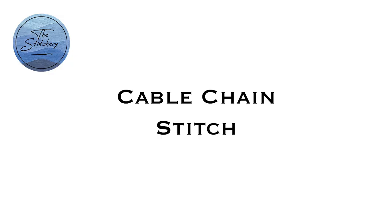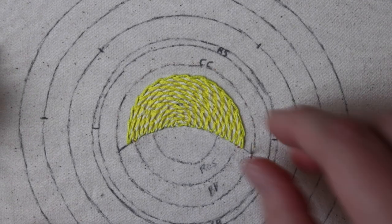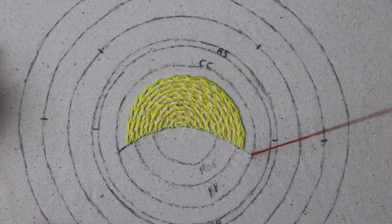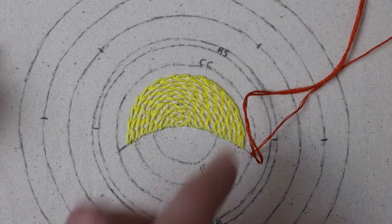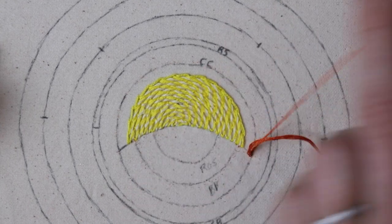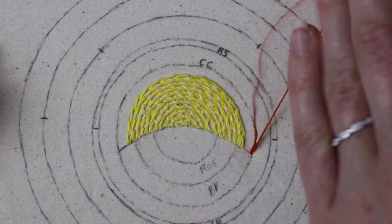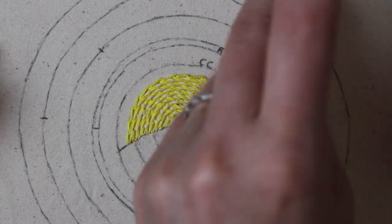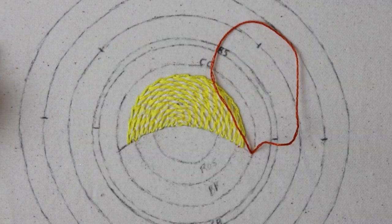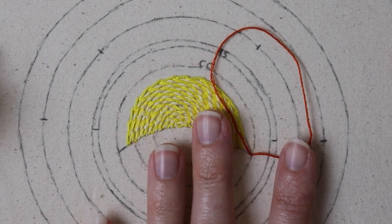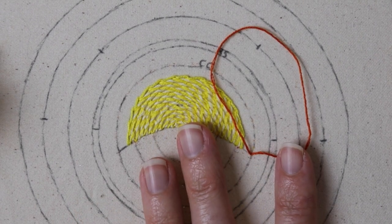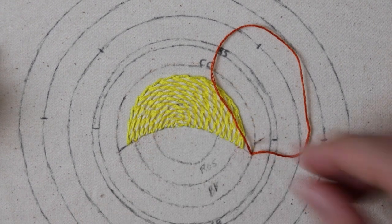We're gonna start out by doing one regular chain stitch. This is just sort of the anchor and this isn't necessarily the only way to do it. I've seen people do cable chain stitch without using a sort of regular chain anchor on one side, but I find this the easiest way. So you're creating that very first chain by coming up through the fabric, going back down in the same location, and then coming up one stitch length away and going through the loop that you've created.